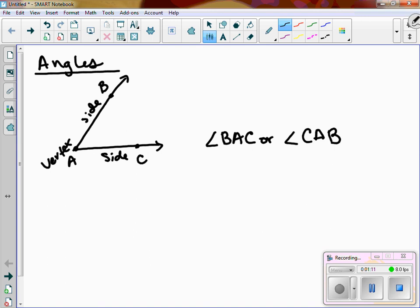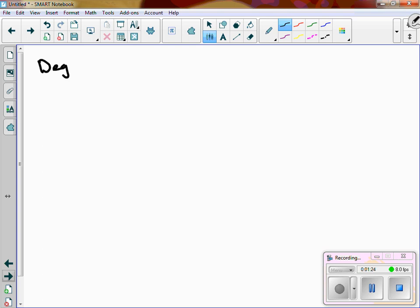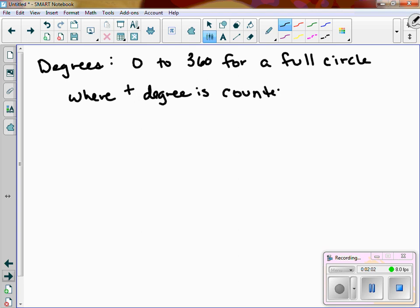There are three different types of ways that you could represent the measure of an angle. The most common way that most of you probably know is using degrees. Degrees, you are going from zero to potentially 360 for a full circle. If you're going past that, you know that you are going one revolution and then some. So zero to 360 where the positive degree is counterclockwise. So obviously negative degree is clockwise.